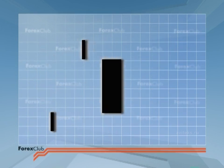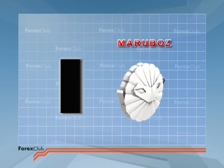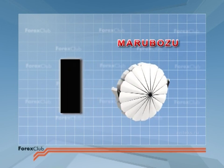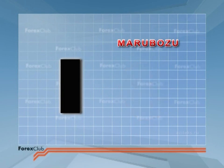Sometimes the candlestick does not have any shadows. These are known as Marabotsu candlesticks. We shall be discussing the implications of different types of candlestick throughout this film.